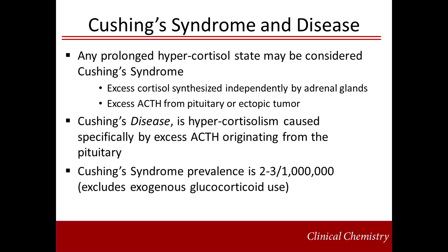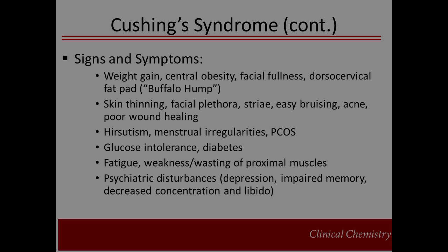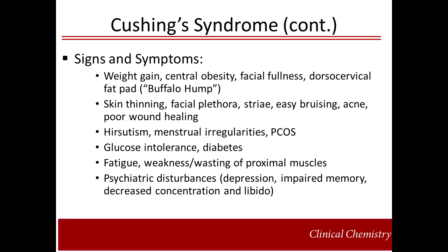True Cushing's cases are fairly rare, with two to three cases occurring in every million persons, excluding cases arising from exogenous glucocorticoids. Clinical signs and symptoms of Cushing's syndrome include body habit changes, such as weight gain predominantly in the central or abdominal area, facial fullness, sometimes called moon facies, and increased size of the dorsal cervical fat pad, or buffalo hump.